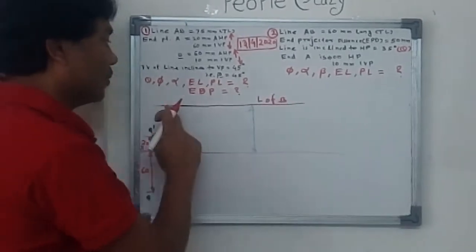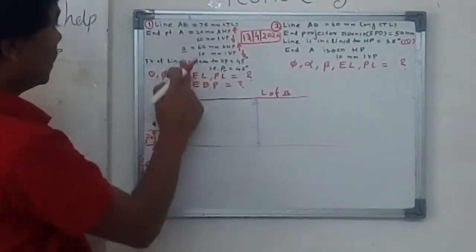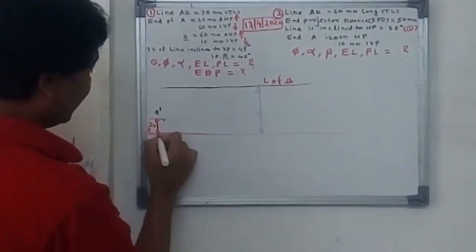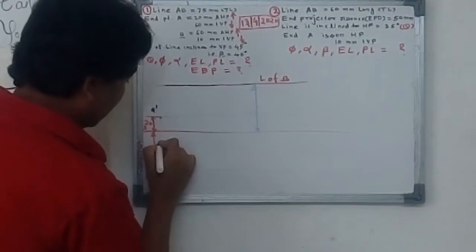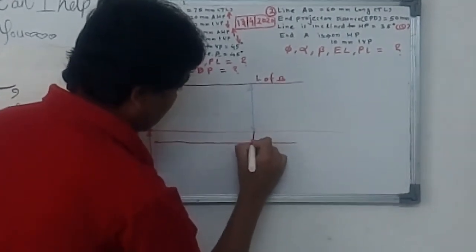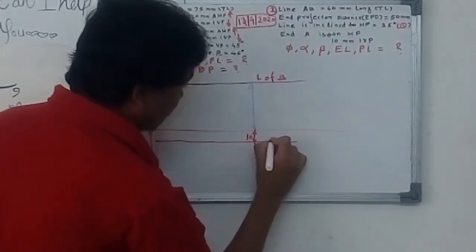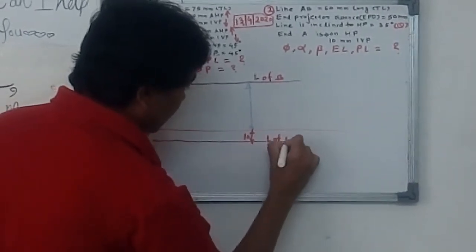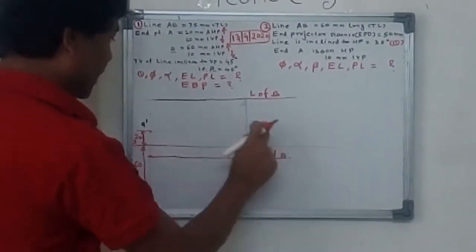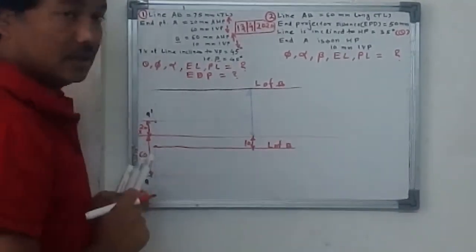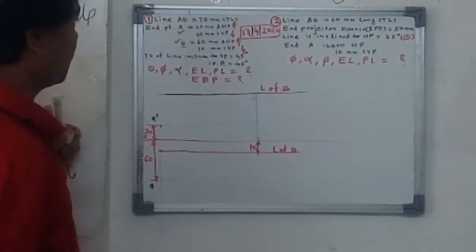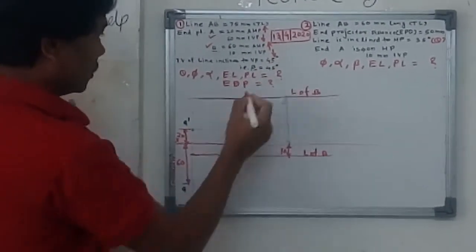Endpoint B is also 10 millimeters in front of VP, so from the XY line, below XY at a distance of 10 millimeters, draw the locus of B. On this line the A dash point and locus of B are established. We have now used this information. The next step involves beta.